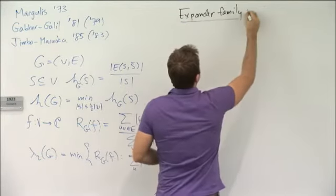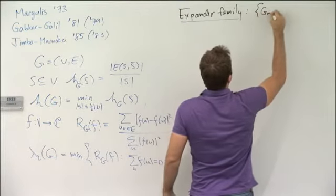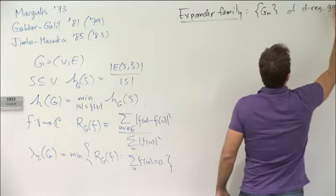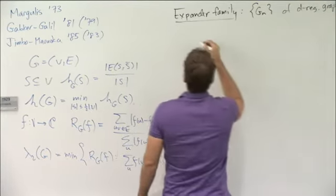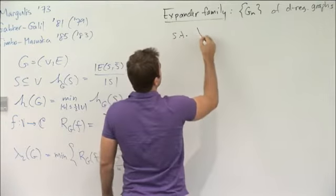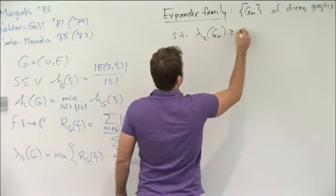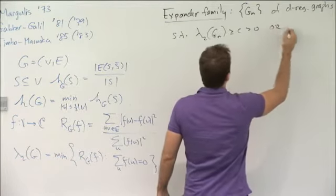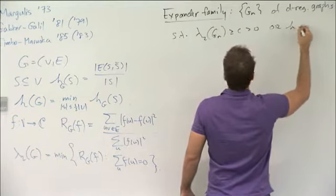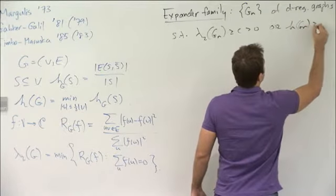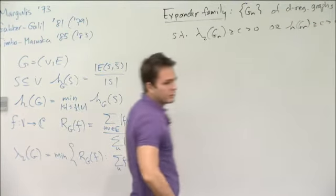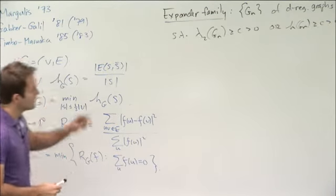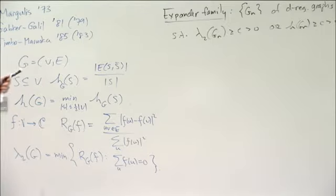An expander family is a sequence of d-regular graphs such that the second eigenvalues are uniformly bounded, or equivalently the expansion constants of the graphs are uniformly bounded. The goal today is to present an elementary family of graphs with an elementary analysis showing that they're expanders.